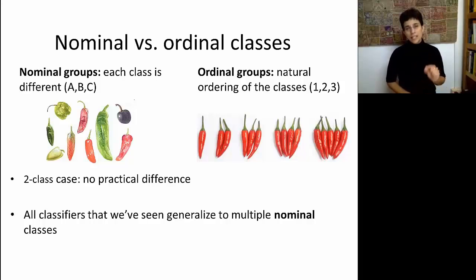We'll notice that the classifiers that we looked at - naive Bayes, k-nearest neighbors, trees, and logistic regression - easily generalized to nominal classes, meaning different classes, but not so easily, or not at all, to ordinal groups.